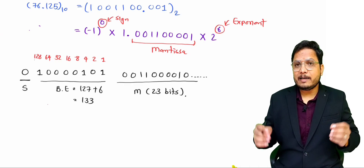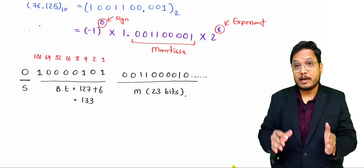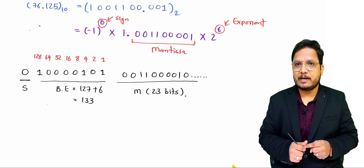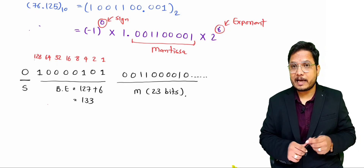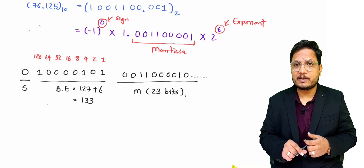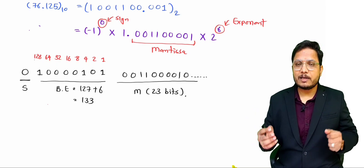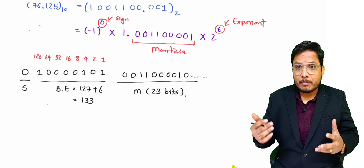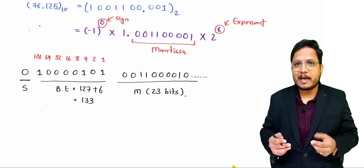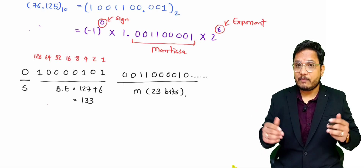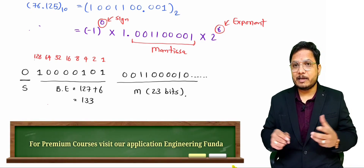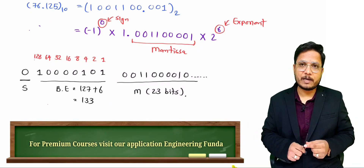This is how we can directly convert any number into IEEE 754 single precision standard. I have seen many questions based on this in competitive examinations, so in future videos I will make more examples to give you further clarity. If you have anything to share, please note it in the comment box — I will be happy to help. Thank you so much for watching this video.